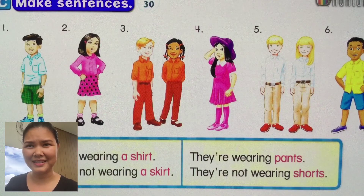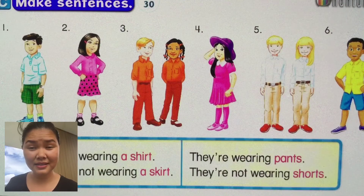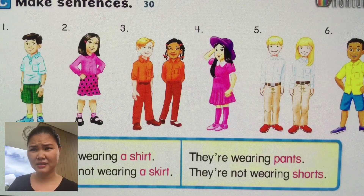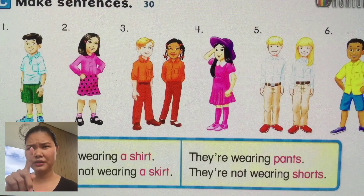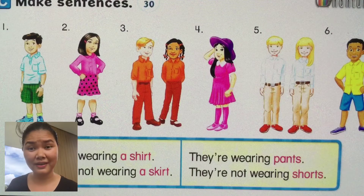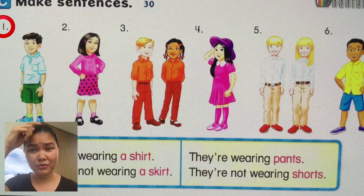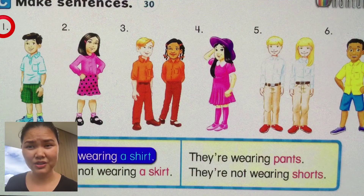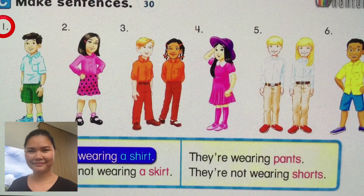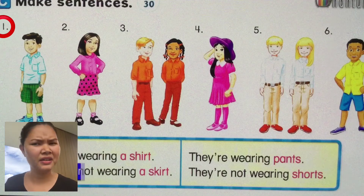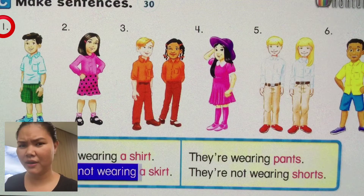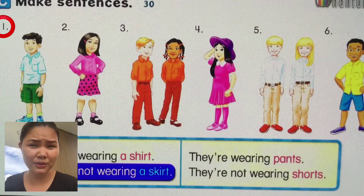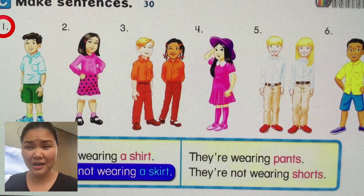Now we'll be doing sentences. Let us make sentences — look at pictures one, two, three, four, five, and six. Number one: he's wearing a shirt. He's not wearing a skirt.